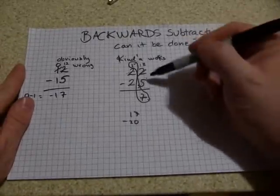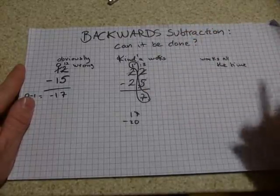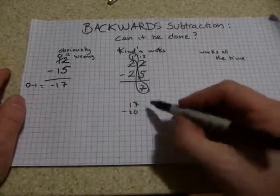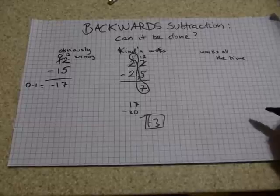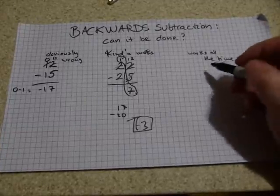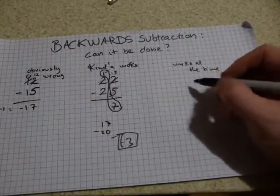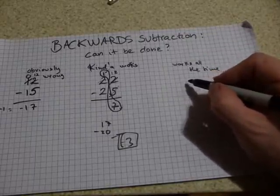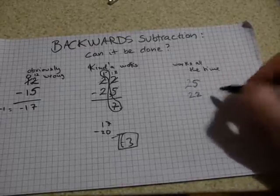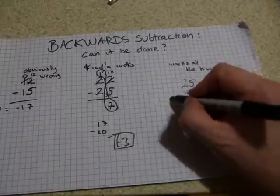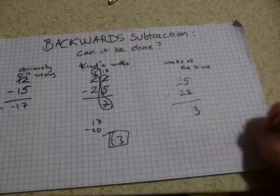What works all the time is recognizing that you still have 17 remaining and that the final answer is going to be minus 3 — you're 3 short. What works all the time is: flip the amounts, write the bigger amount on top and the smaller amount below, follow standard procedure, and you get 3. Now, this 3 is not the same as negative 3 — that part comes next.